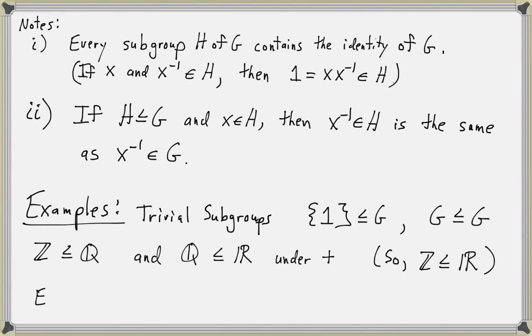Now consider the set E of all even integers. The even integers form a subgroup of the integers. We could check that a set H is actually a group by checking all of the group axioms, but once we know we're starting with a group G, it's easier to check that H is a subgroup of G without checking all of the axioms. This next theorem states the subgroup criterion.